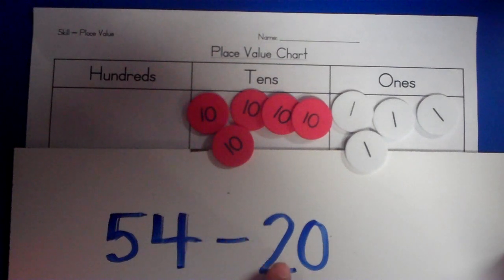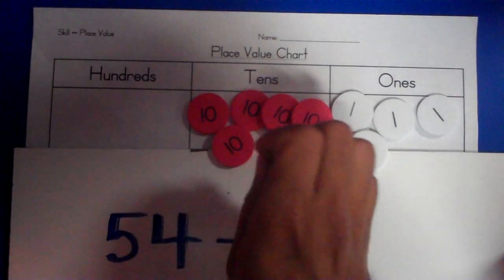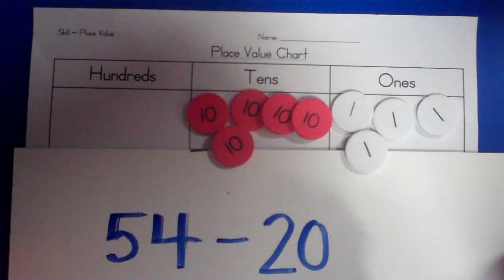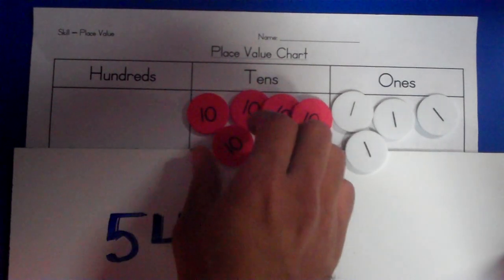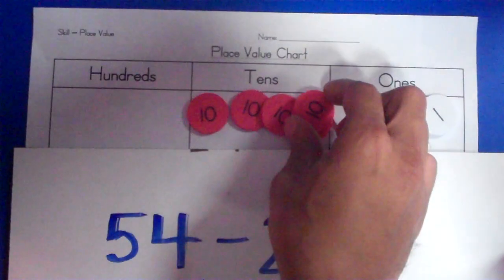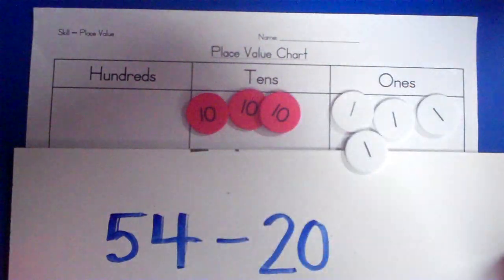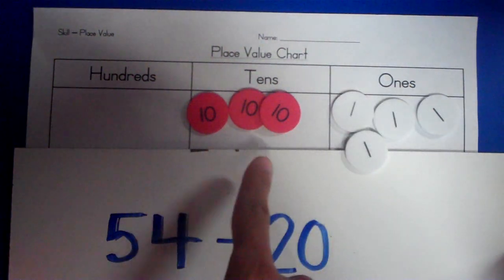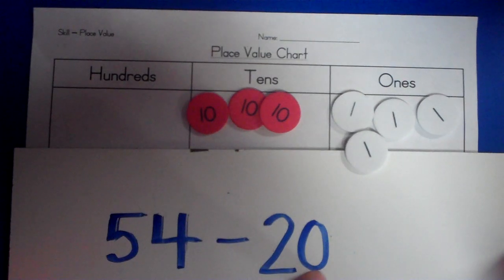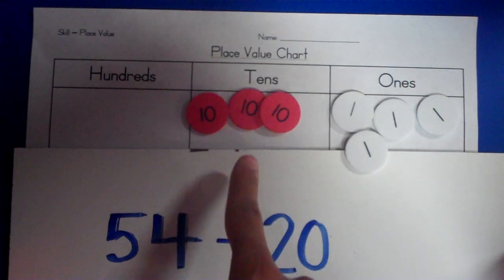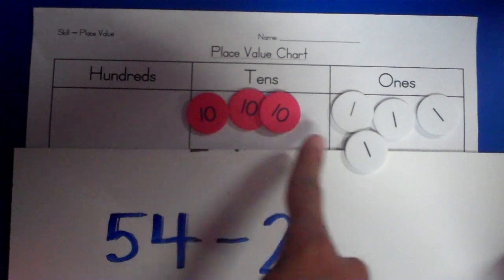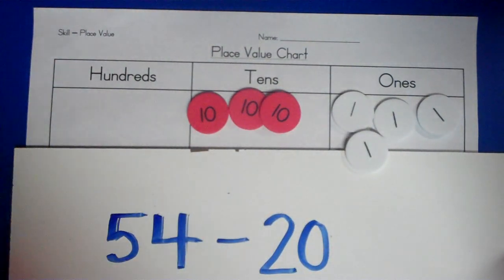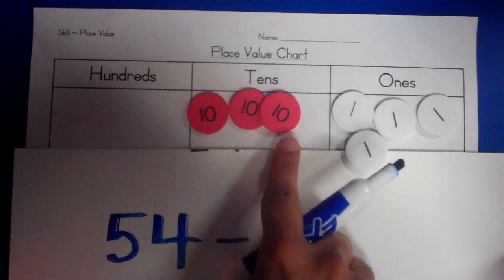Let's take two tens away, because two is in the tens place and zero ones. So, taking away means that I'm going to physically take them out of the group. So, let me take two tens. One ten, two tens. I've taken two tens away. It doesn't say to take any ones. So, my answer is three tens and four ones. Three tens and four ones tells me that I have 34.